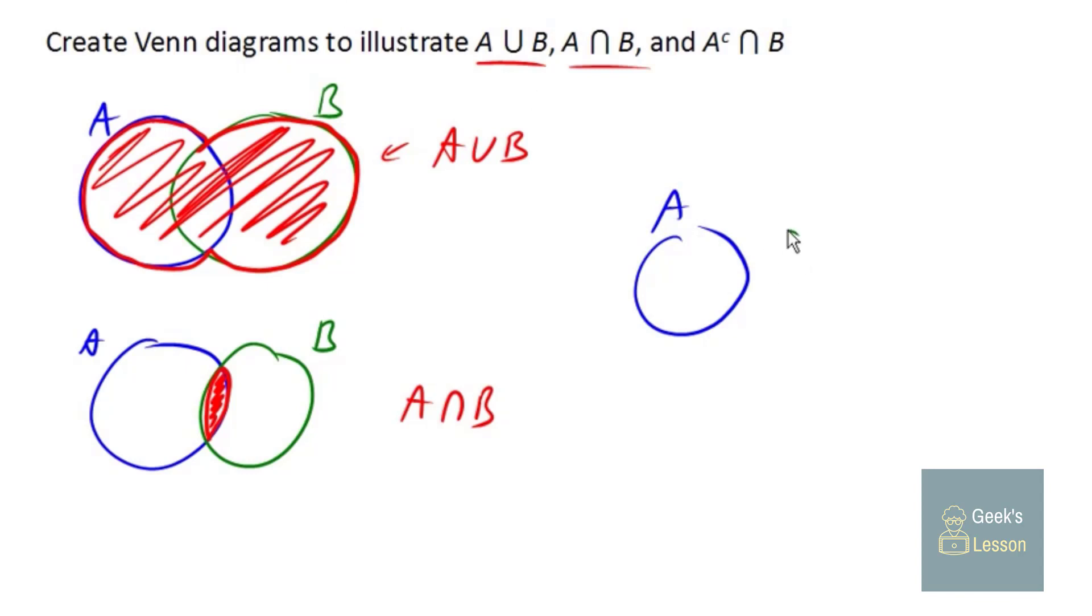Finally, for our last one here, we've got A complement intersect B. So again, remember A complement means everything that's not in A. So we're outside of set A, but we're inside of set B. So it's everything that's inside set B that's not in set A. And so that would be this region there.